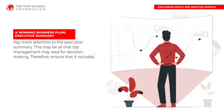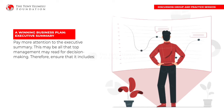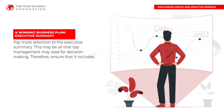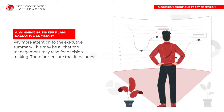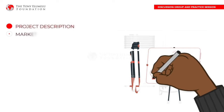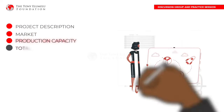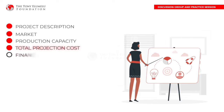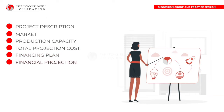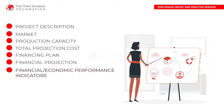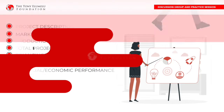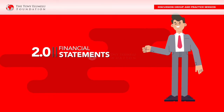A winning business plan: pay more attention to the executive summary — this may be all that top management reads for decision-making. Therefore, ensure that it includes the following: project description, market, product capacity, total projection cost, financing plan, financial projection, financial and economic performance indicators, and conclusion.